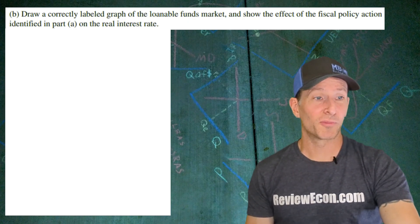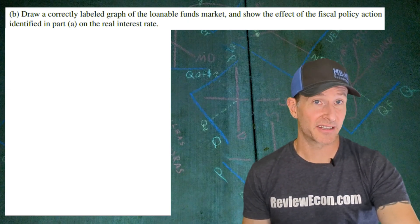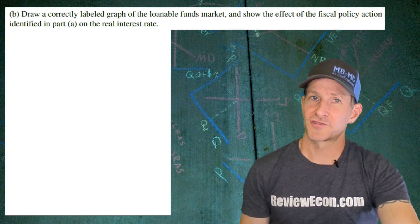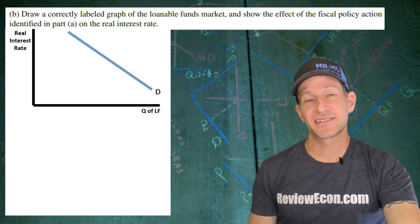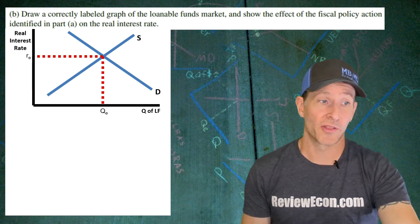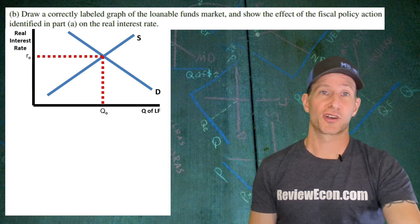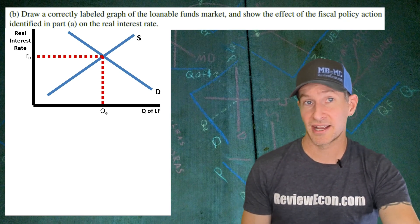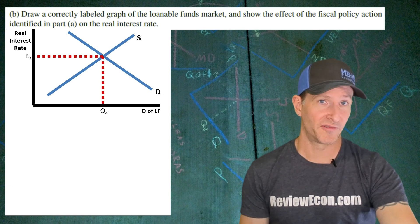For part B, we're going to graph the loanable funds market and show the effect of the fiscal policy action that we just identified in part A. We're going to start off drawing this graph by labeling the axes, quantity of loanable funds on that x-axis, and the real interest rate on the y-axis. We're going to have an upward sloping supply curve, downward sloping demand curve, and we need to mark the equilibrium real interest rate and the equilibrium quantity of loanable funds.